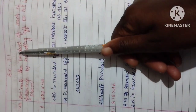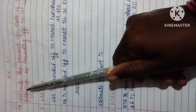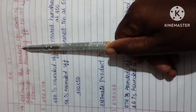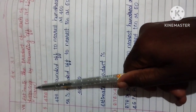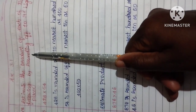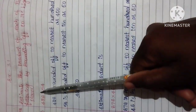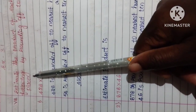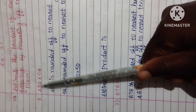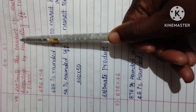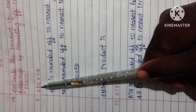Exercise 3.1, 7th main. Estimate the product of each of the following by rounding off to its highest place. First question — product means multiplication.